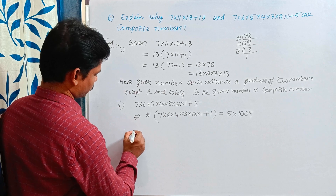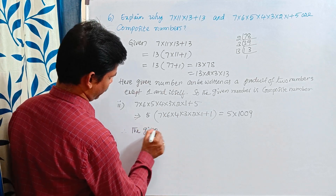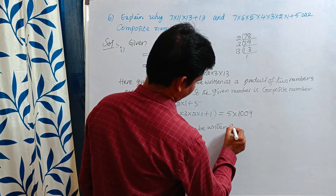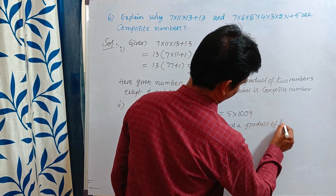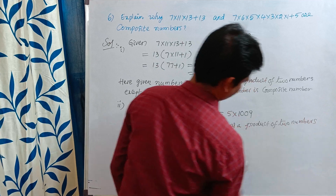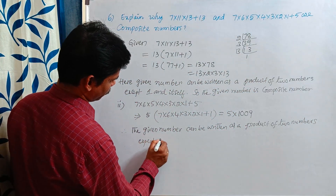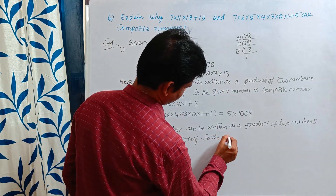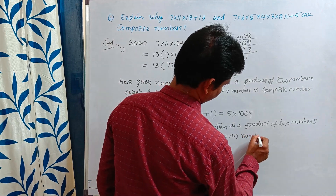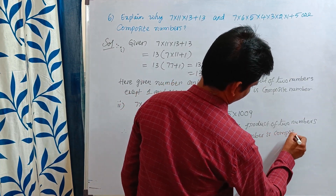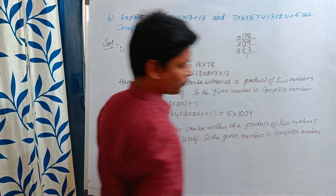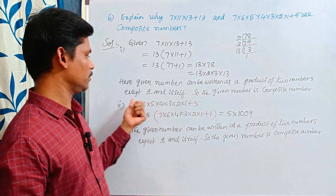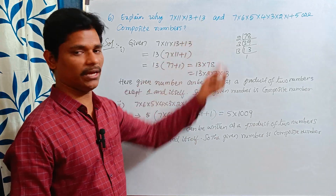Therefore, both given numbers — this number and this number — are composite numbers. Why? Because here, the number can be written as a product of at least two numbers. So except 1 and itself, there are other factors. That is why both these numbers are composite numbers.